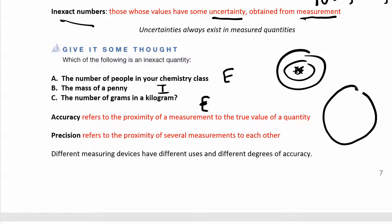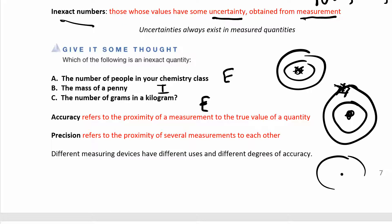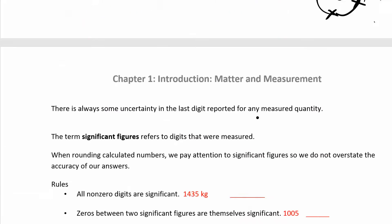Precision is how close different measurements get to each other. If you got three darts really close together over here, that's very precise — but it's not very accurate if you were going for the bullseye. Something like scattered throws is not very accurate and not very precise. Accuracy is the proximity of the measurement to the true value; precision is how close those measurements are to each other. Different measuring devices have different uses and different degrees of accuracy.